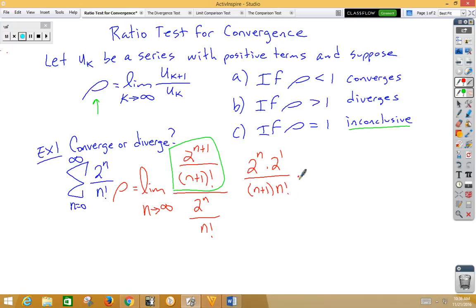We're going to multiply by the reciprocal, which would be n factorial over 2 to the n. Well, so we can cancel out the 2 to the n's. We can cancel out the n factorials. So now we have rho is the limit as n approaches infinity of 2 over n plus 1.